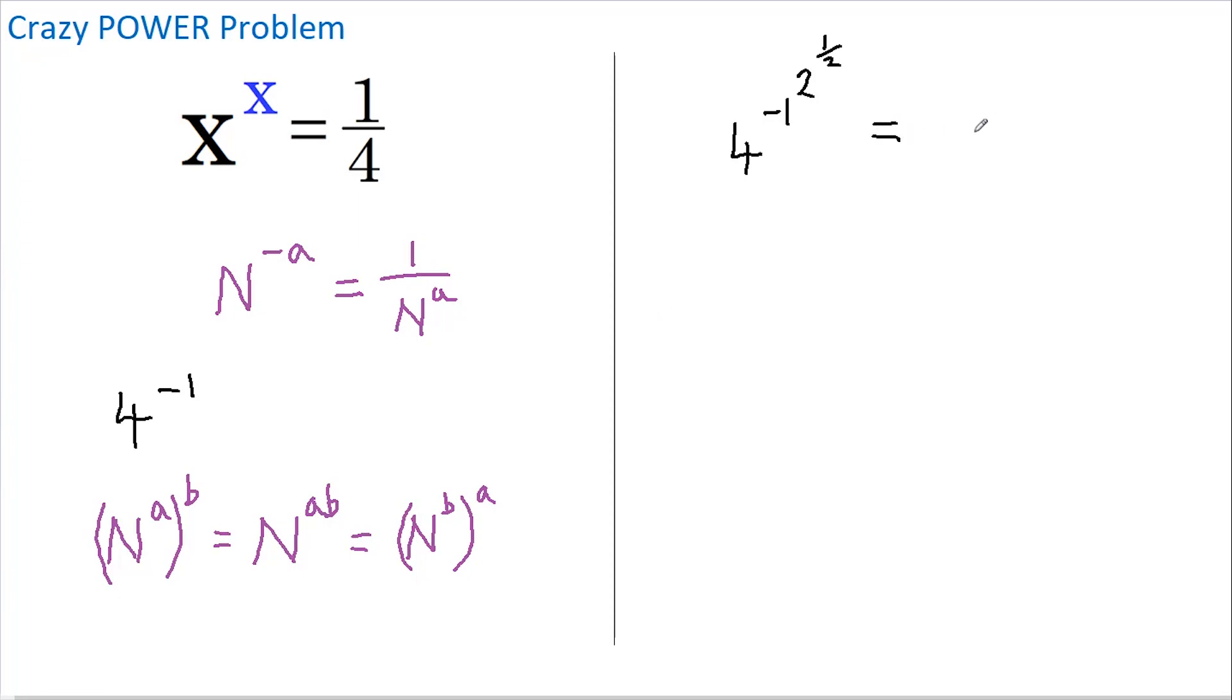So this now becomes 4 to the power of, let's do a half first, then 2, and now minus 1. The reason I've done this is because I can evaluate 4 to the power of a half. That just means a square root of 4.